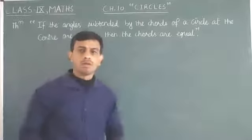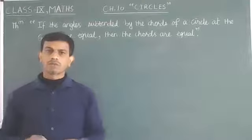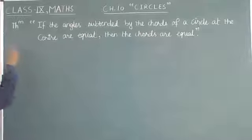This is the opposite of the previous theorem, which states that equal chords of a circle subtend equal angles at the center. So let's figure out the proof.